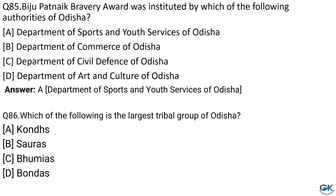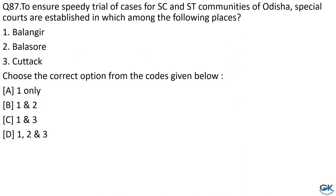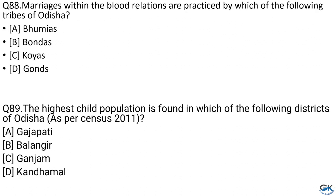Question No. 86: Which is the largest tribal group of Odisha? Option A: Kondhs. Option B: Sauras. Option C: Bhumijs. Option D: Bondas. The answer is Option A, Kondhs. Question No. 87: To ensure speedy trial of cases of SC and ST communities in Odisha, special courts are established at which places? 1. Bolangir. 2. Balasore. 3. Cuttack. The answer is Option D, 1, 2, and 3. Question No. 88: Marriages within blood relations are practiced by which tribe of Odisha? Option A: Bhumij. Option B: Bonda. Option C: Koya. Option D: Gonds. The answer is Option D, Gonds.